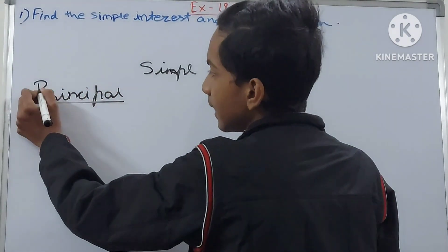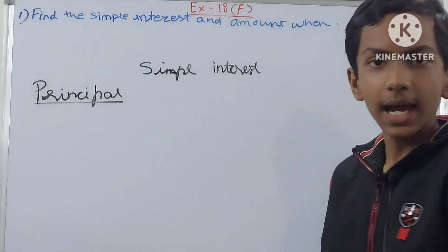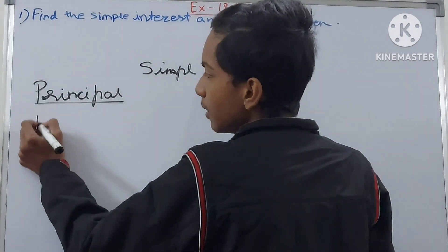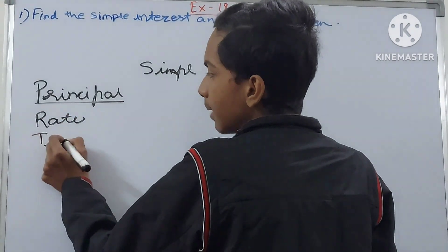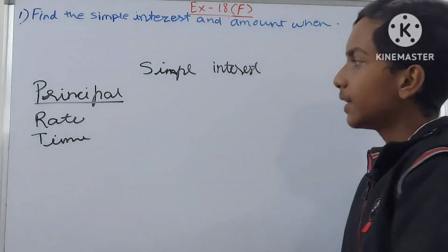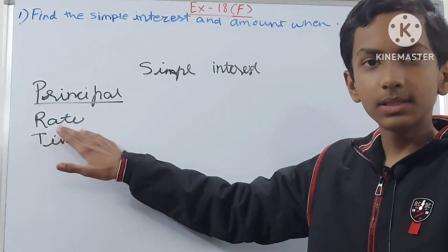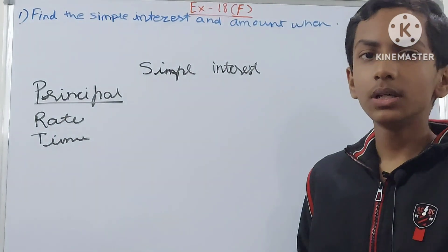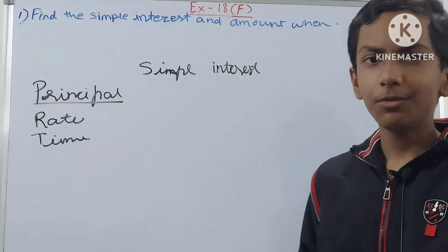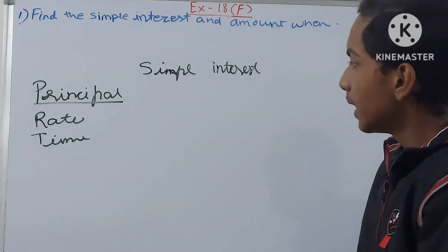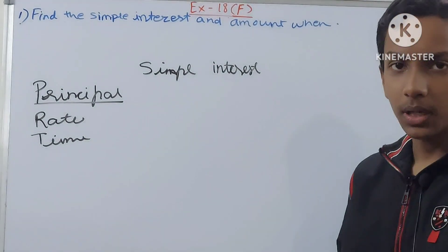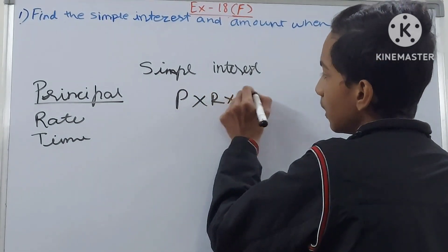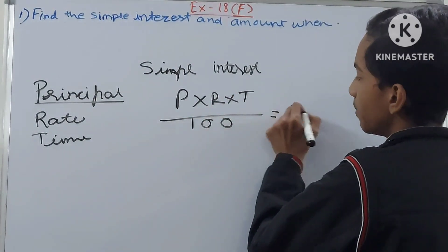Principal is the amount that is being lent to the person. For finding simple interest we have a simple formula — we need to know the principal, the rate, and the time. Principal is the amount being lent; rate is, for example, 10 percent; time is per year — it can be one, two, or three years. The formula is: Simple Interest = P × R × T ÷ 100.